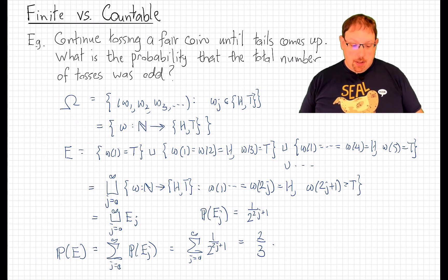In this example, it was critical that our probability measure be assumed to be countably additive over disjoint unions of events. Without that assumption, we simply wouldn't be able to calculate this probability.